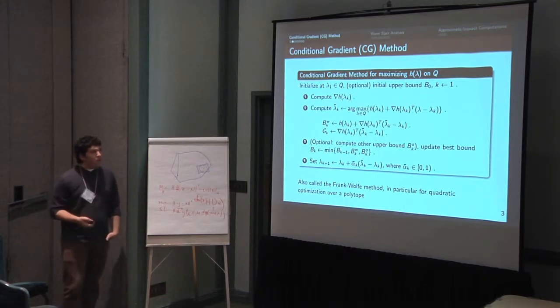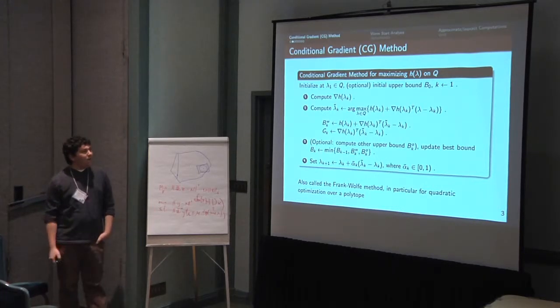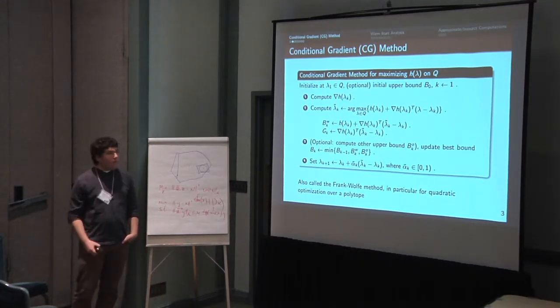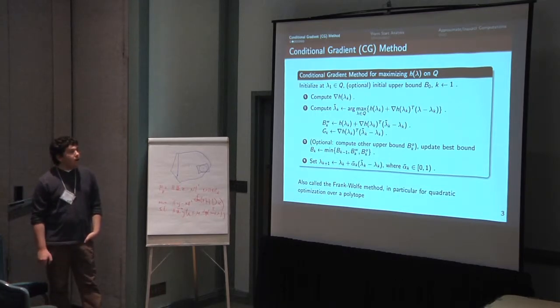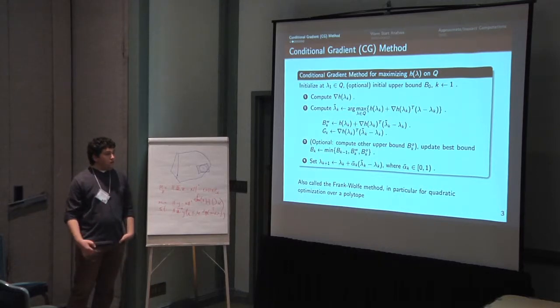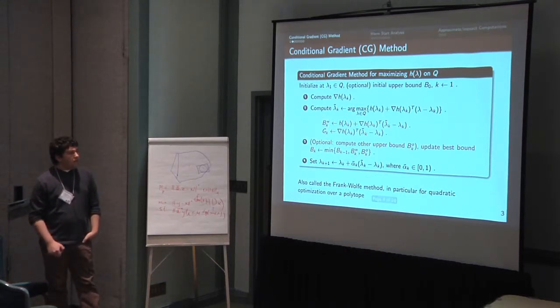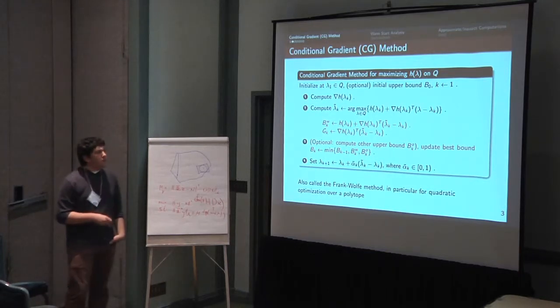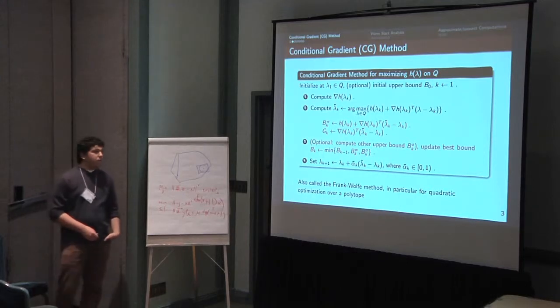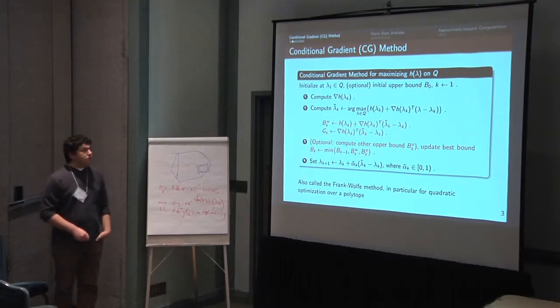So this is just an outline of the method that I think everyone's familiar with by now. Basically, we compute a gradient, solve a linear optimization problem that maximizes the linearization at our current point, and then we take a step towards that extreme point. But what I want to highlight here is something non-standard, which is that we're explicitly keeping track of some information at each iteration, namely this BKW, which is an upper bound on the optimal objective function value, and this GK, which we call the Wolf gap, which is like a duality gap but with a special structure.